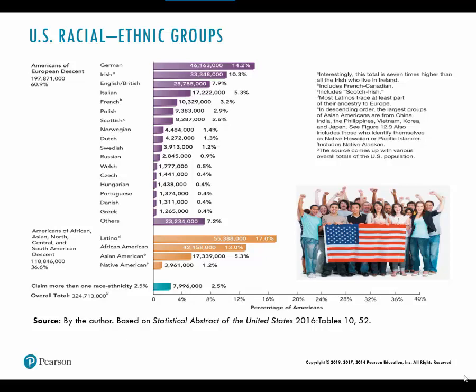Additionally, the census provides information about people's nation of origin. This symbol in particular highlights Americans of European descent — they predominantly claim German ancestry, and a lot also claim Irish, although the slide notes this is seven times higher than all the Irish who live in Ireland. So unless we have somehow absorbed more Irish than even exist in Ireland, maybe a lot of people claim this whether they know it to be true or not. Other common claims include Italian, French, Scottish, and Norwegian.